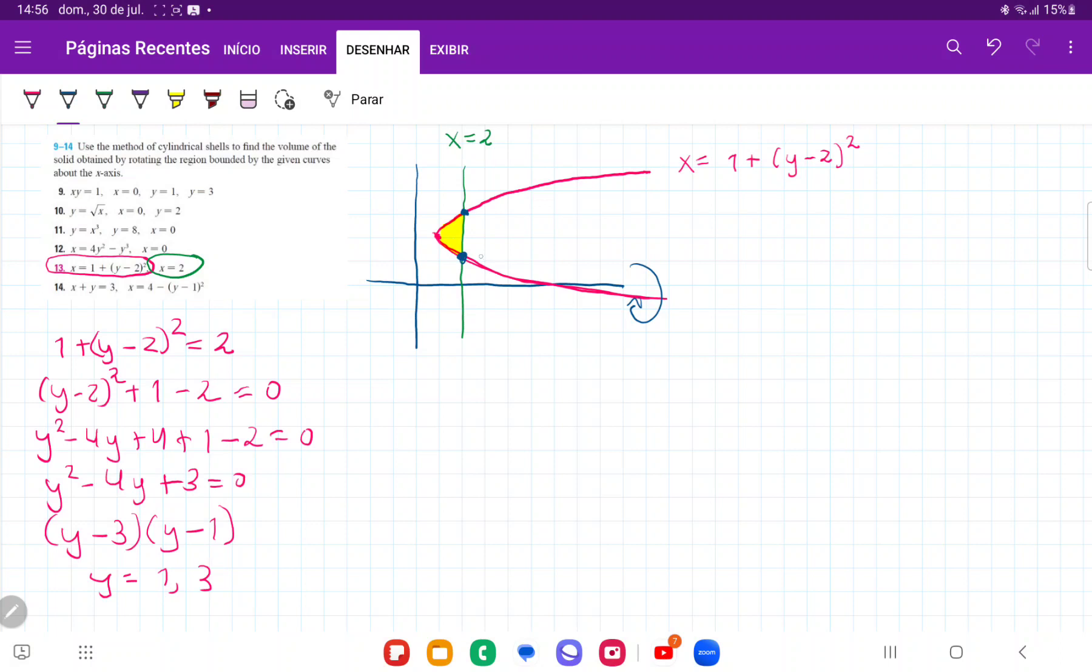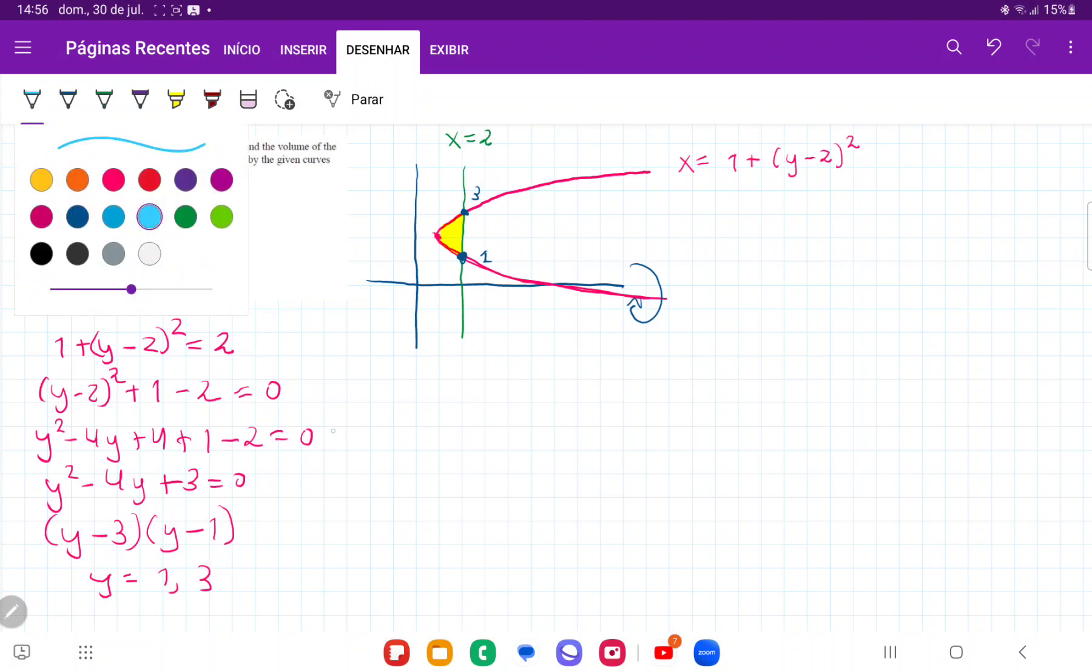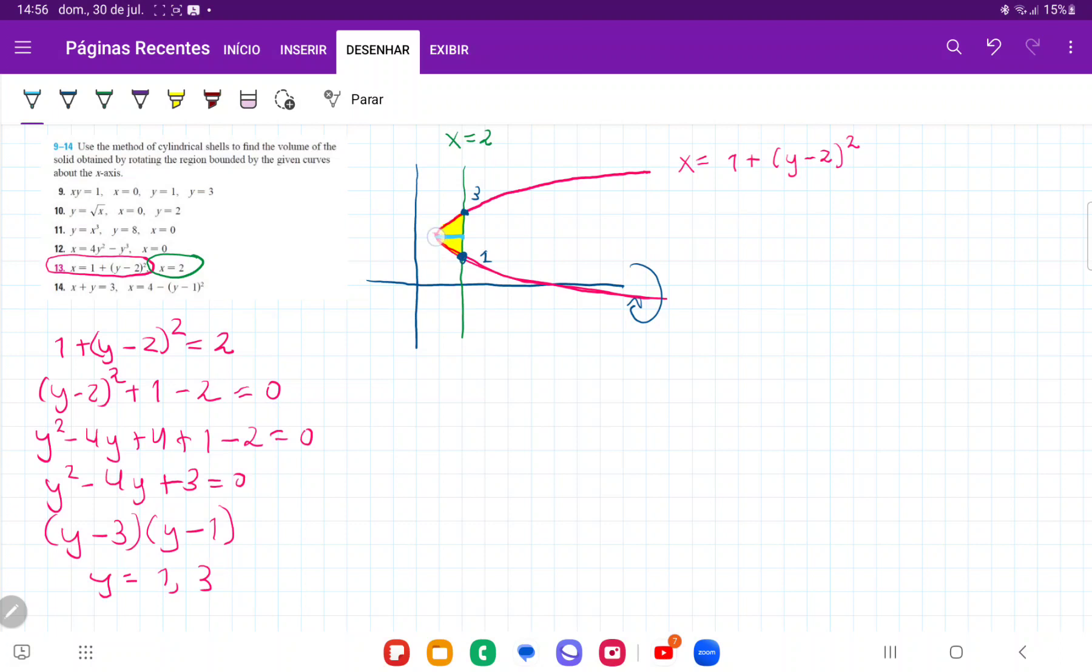So these two points are at 1 and 3 on my y-axis. Now that I have these boundaries, let's think about what happens when we revolve this area about the x-axis. I take this little chunk here that touches from the curve x=2 all the way out to the pink curve, and I'm going to revolve it about the x-axis. When I revolve it, it's going to give me a cylinder. Now I'm going to think about unwrapping the cylinder and think of it like an infinitely thin sheet of paper that got wrapped around the x-axis.